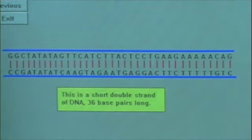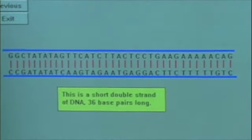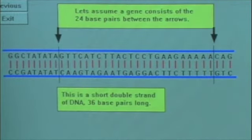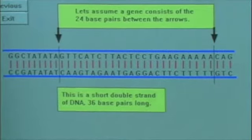This is a short double strand of DNA, the same one you saw in the diagram. The gene is the section between the arrows. Now remember, this is much too short for a real gene.